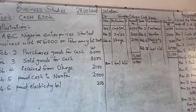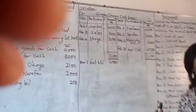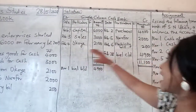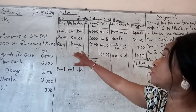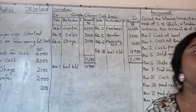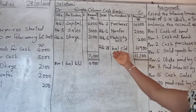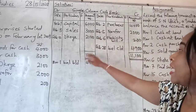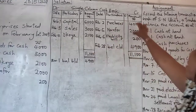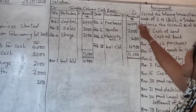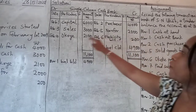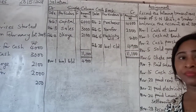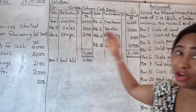That is all for the posting. Then you have to balance the account. In balancing the account, you have to determine the difference between the debit side and credit side. The summation on the debit side is 11,100 Naira, and the summation on the credit side is 6,290 Naira. When you subtract it from the debit side, you have 4,900 Naira as your balance carried down. That is the difference between the debit and credit side.